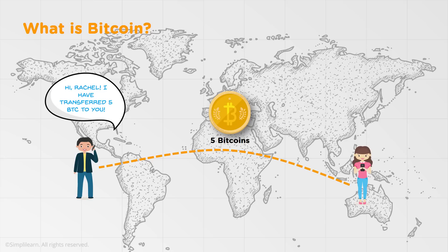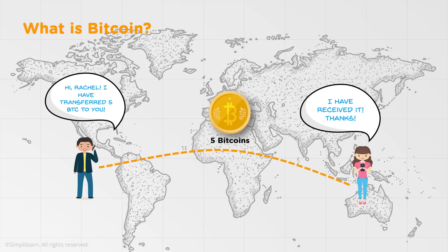What is Bitcoin? Let's take an example. There is someone who wants to send 5 Bitcoins to Rachel. Bitcoin is based on the concept of digital currency — anyone across the globe can transfer Bitcoin irrespective of geography. You just need to open an account on the Bitcoin network, have some Bitcoins, and you can transfer it. You can purchase Bitcoins through exchanges or mine them.